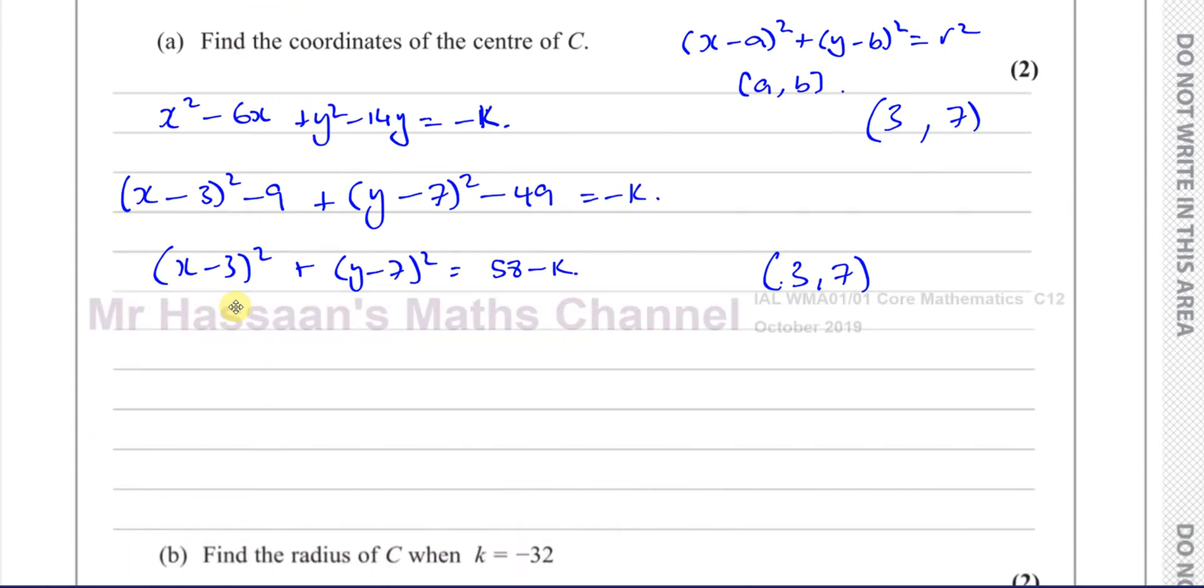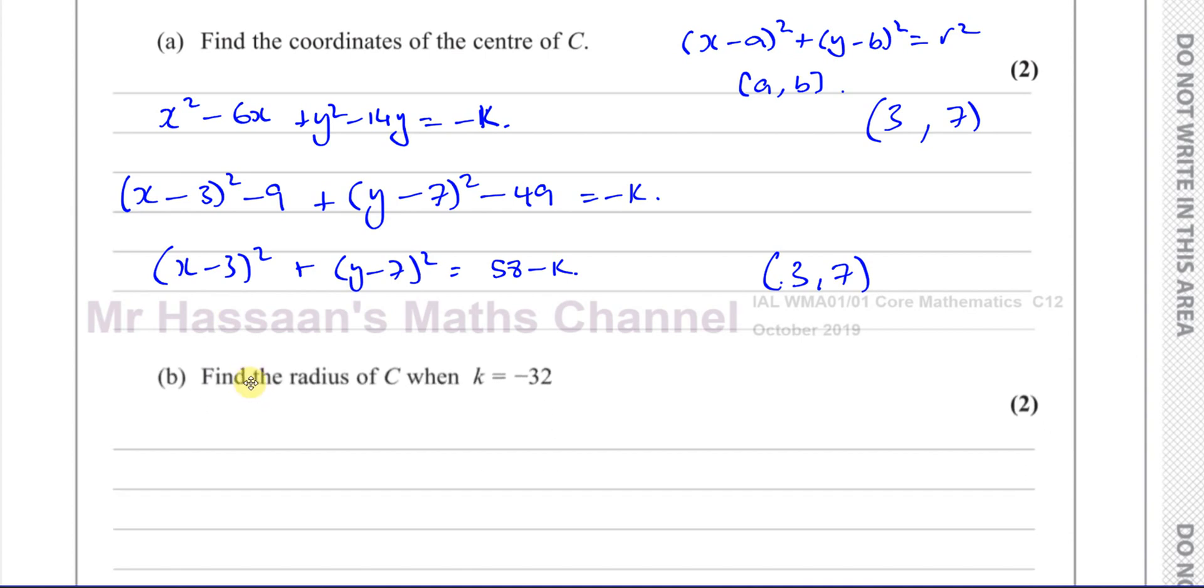Moving on to part B: Find the radius of C when k equals -32. The radius squared is 58 - k. This is r². So when k equals -32, r² is going to be 58 - (-32), which is 58 + 32, which is 90.